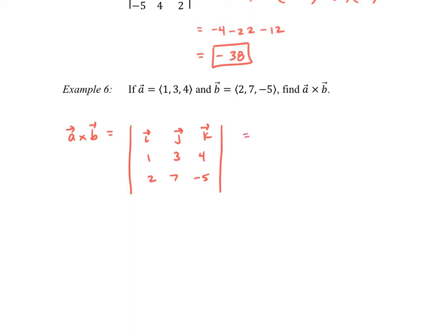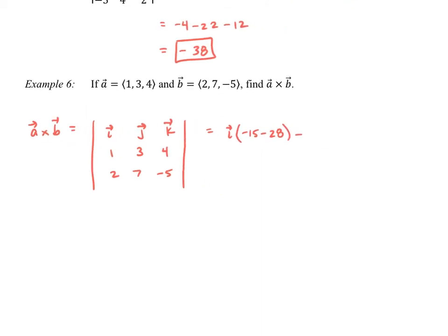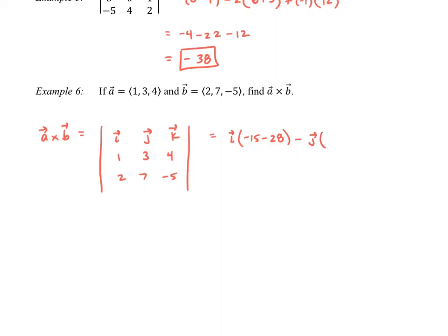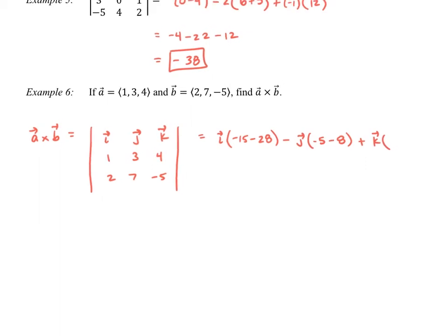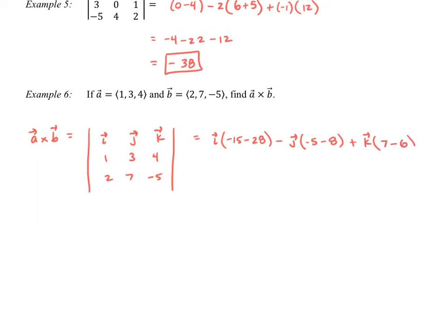Calculating this, we have vector i multiplied by (3 times negative 5 = negative 15, minus 4 times 7 = 28). Don't forget the minus j times (1 times negative 5 = negative 5, minus 2 times 4 = negative 8). Plus k multiplied by (1 times 7 = 7, minus 3 times 2 = 6). Simplifying: negative 43i, then minus negative 13 so plus 13j, and just 1k. So our resulting vector — which is perpendicular to both A and B — is ⟨−43, 13, 1⟩.